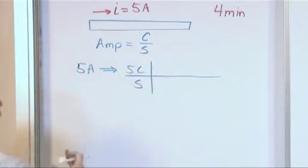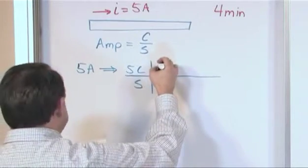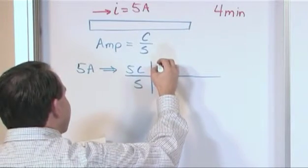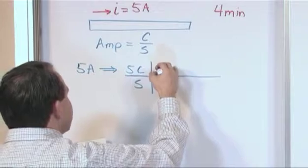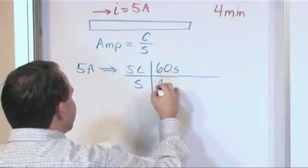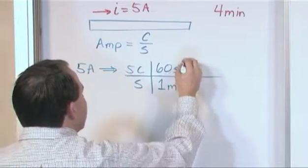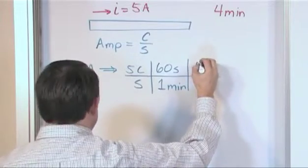What we need to do is realize that 60 seconds is 1 minute. And the length of time that we have was actually 4 minutes.